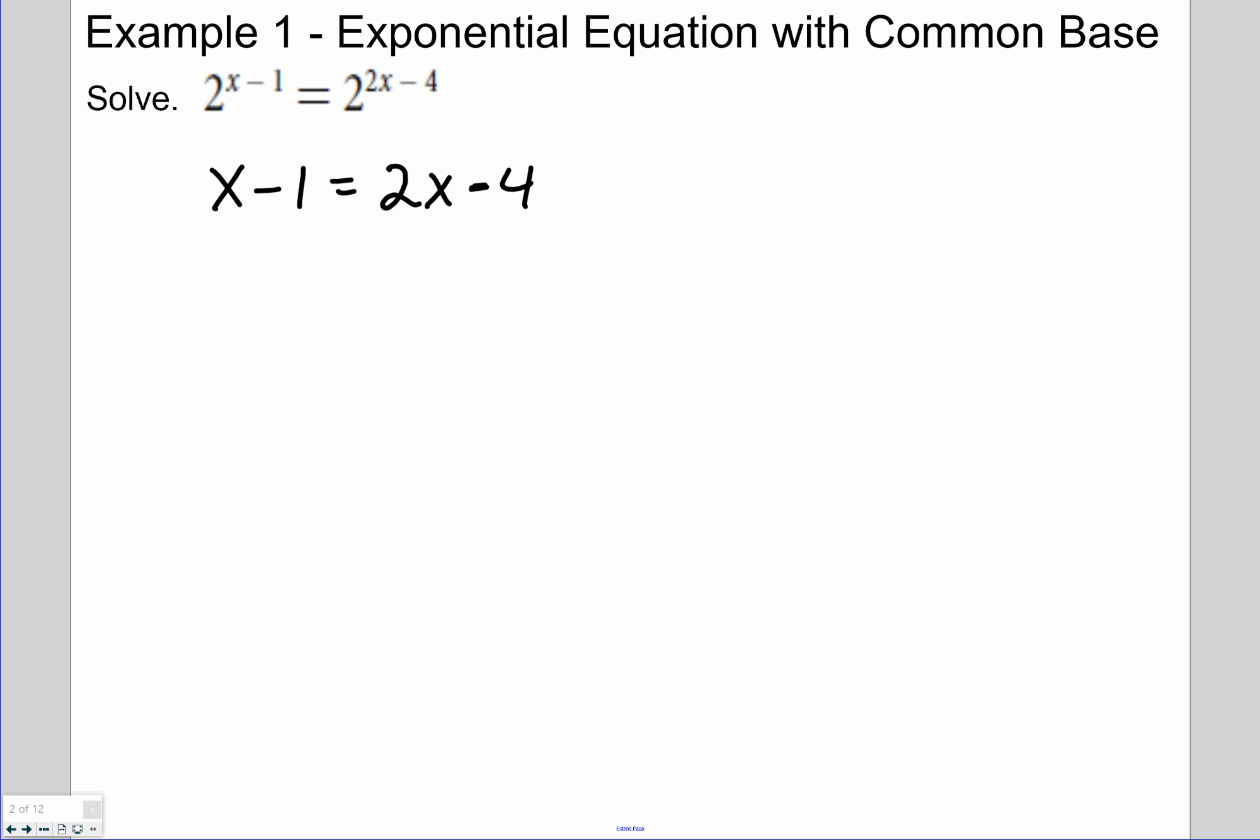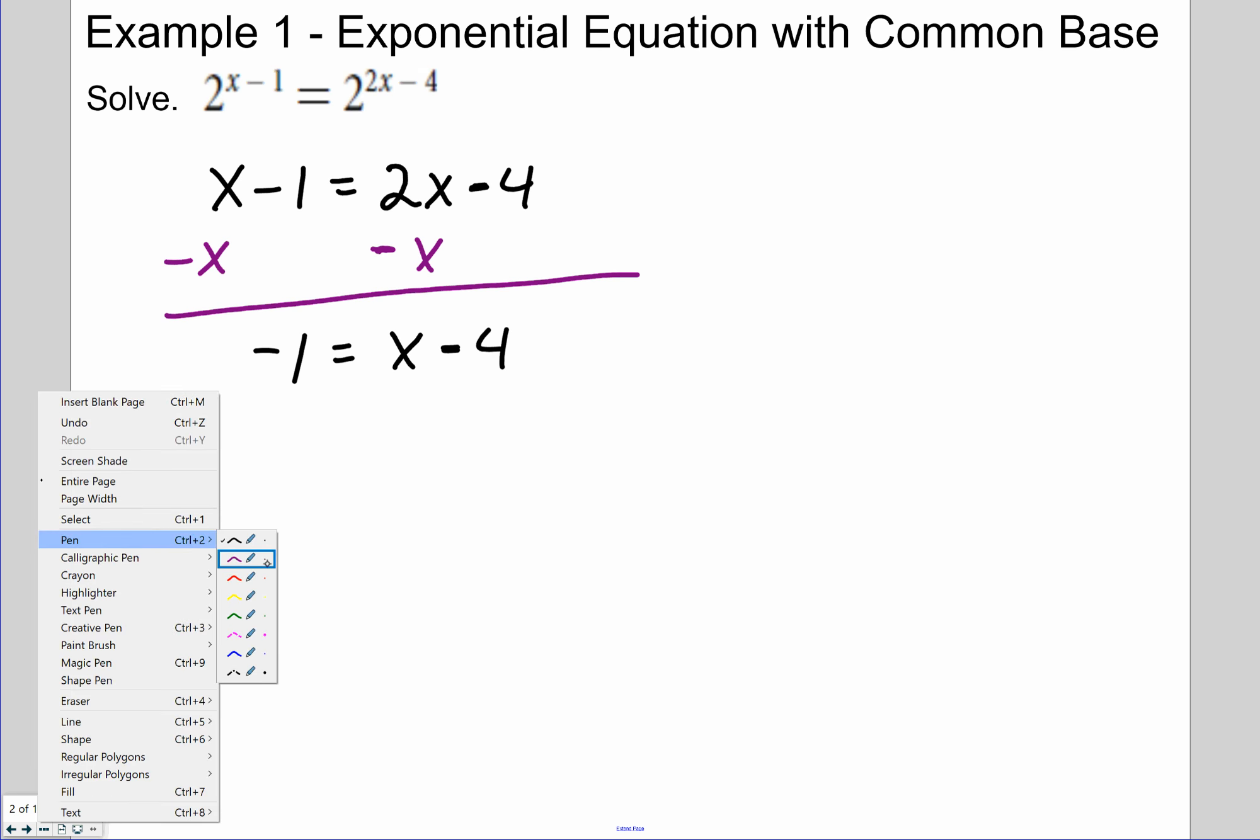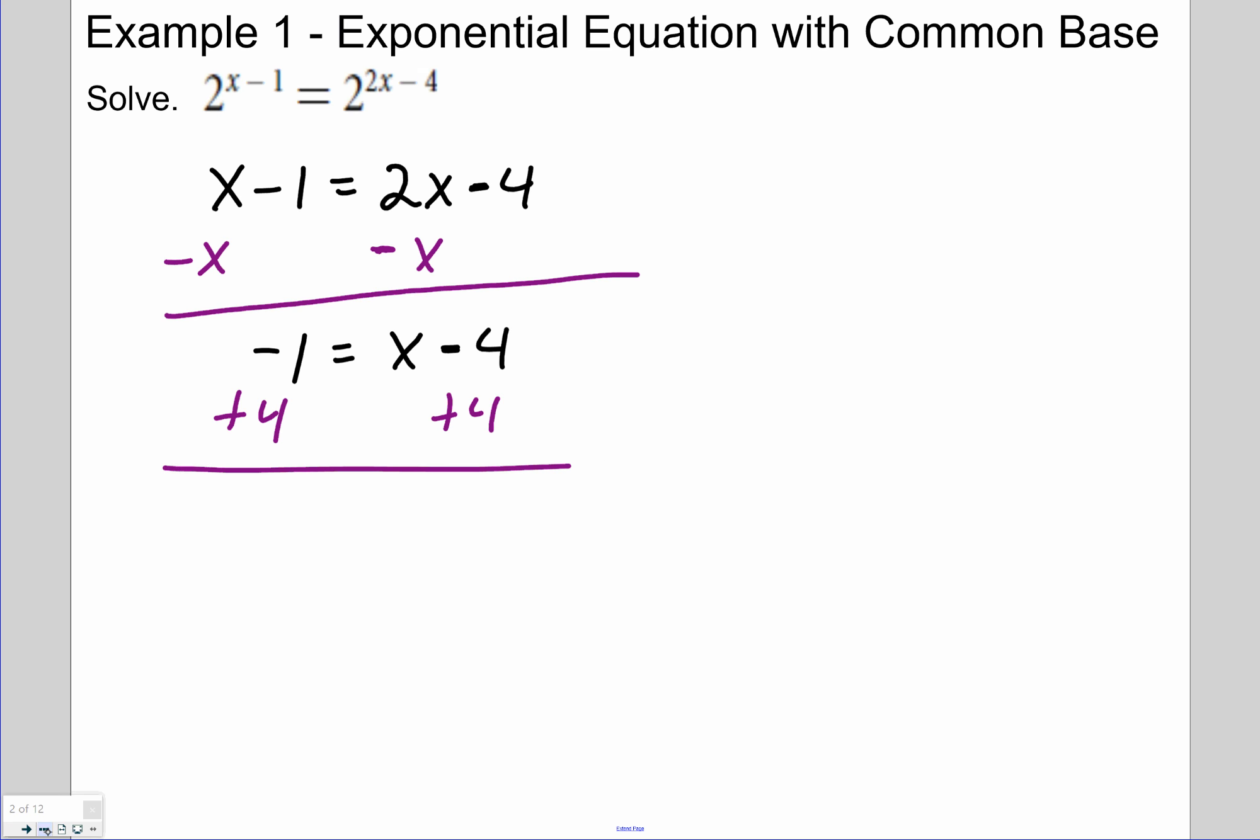And now it becomes something you did in late middle school or early high school. So let's do this a little quicker here. How do you want to move, Edgar? Which direction do you want to move? We've got to get our variables on the same side first. Do you want to move the x or the 2x? The x. So we're going to move the x by subtracting x. So that leaves us with negative 1 equals, now what's the right side? x minus 4. Excellent.